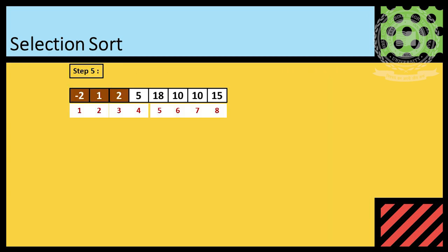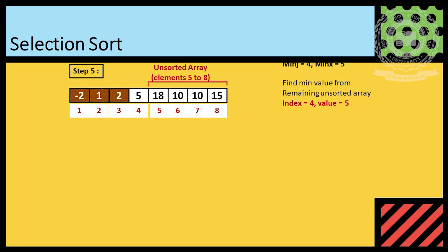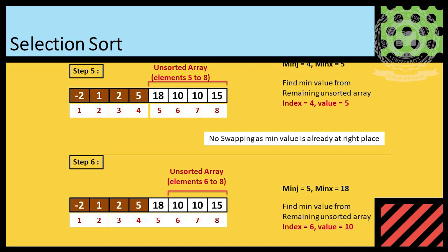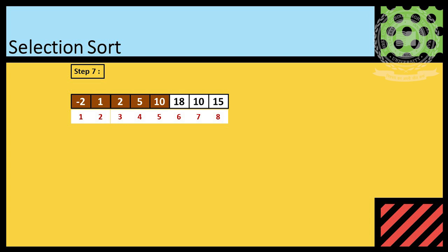In next step, we find minimum element from unsorted array, that is 5, and placed at correct location. Again, we find minimum element from rest of array, that is 10, so we swap.